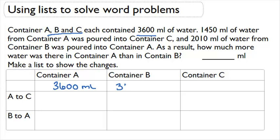Container A, B, and C all had 3,600 mL of water. So let's fill that in the first row here.